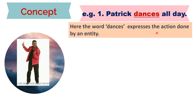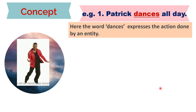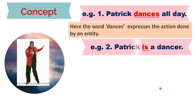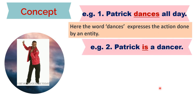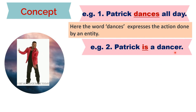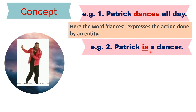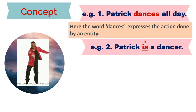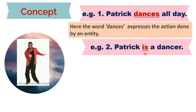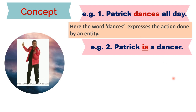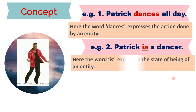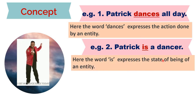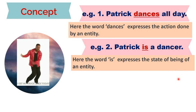'Dances' expresses the action done by an entity. Take a look at the second sentence: 'Patrick is a dancer.' Here 'is' expresses a state of being - he is being a dancer. The second sentence is expressing the state of being of an entity.